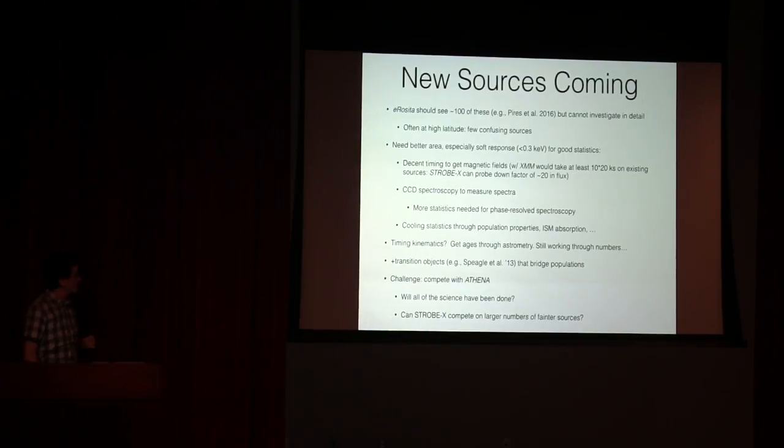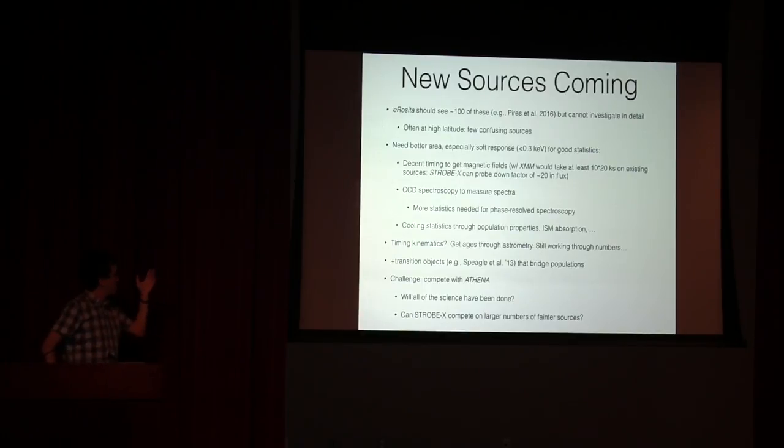And then understanding statistics through observations of the population, log N log S, ISM absorptions to get proxy distances and things like that. You won't be able to get parallax for the majority of these objects, but you can still build up indirect inferences to understand how many of them are there and what is that infer about the progenitor populations? What is that infer about what they could turn into?